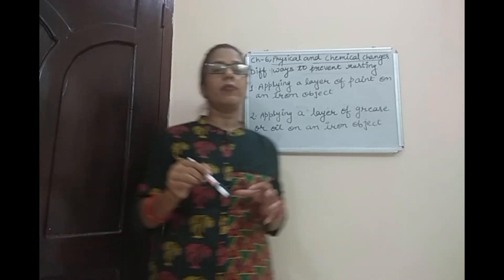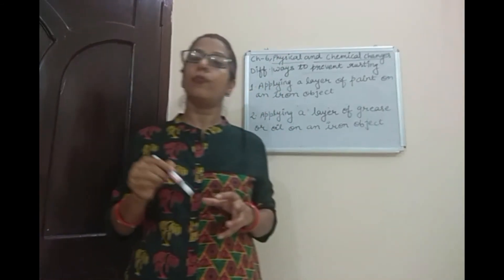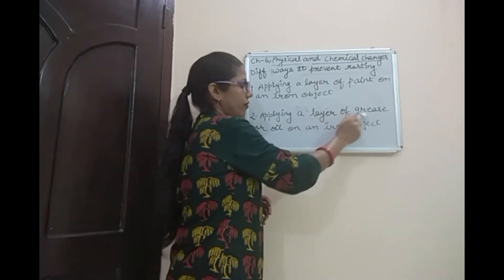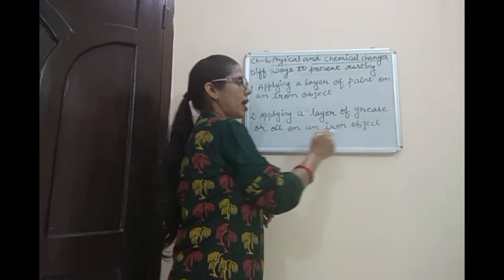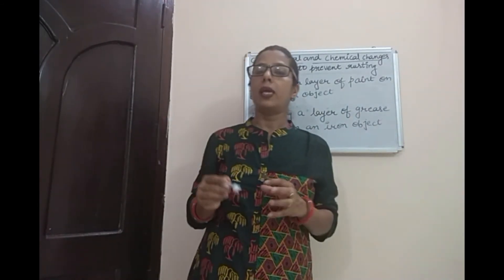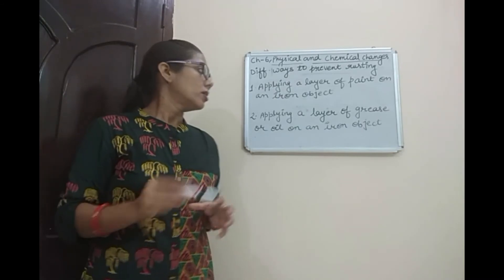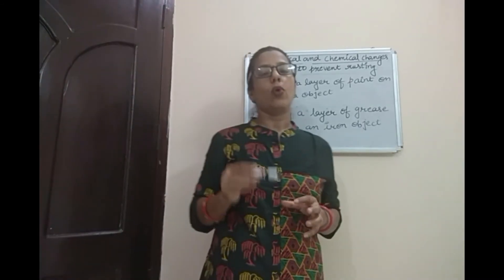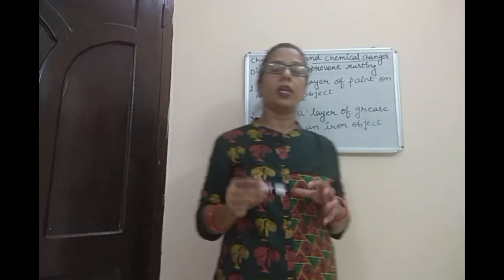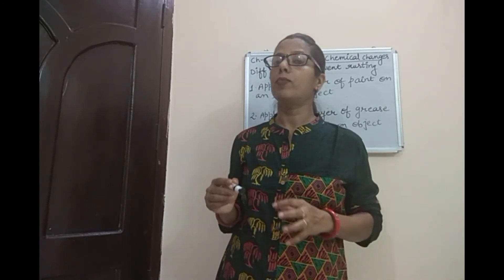We can prevent the iron object from rusting by applying a layer of paint. The second method is applying a layer of grease or oil on an iron object. Similar to paint, when we apply a layer of grease or oil, it does not allow the iron object to come in contact with air and water, so we can prevent rusting.